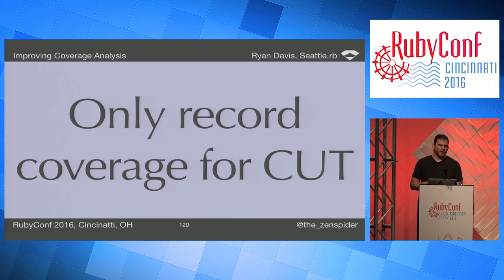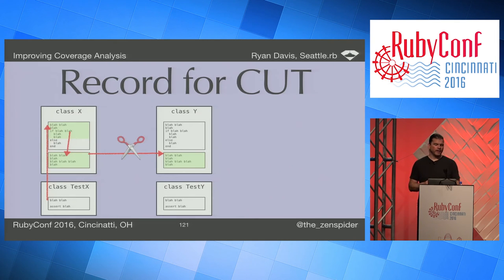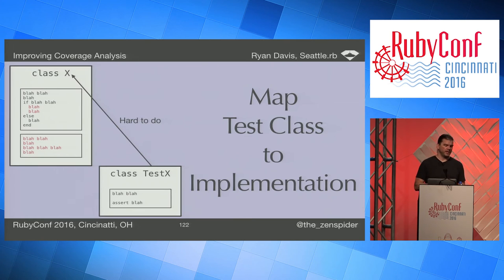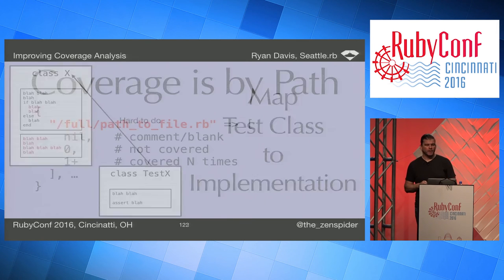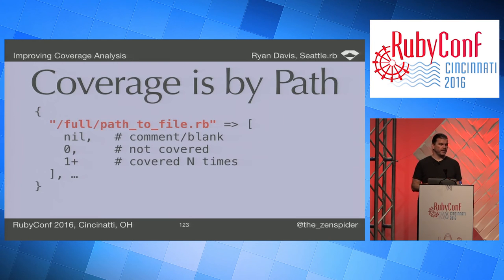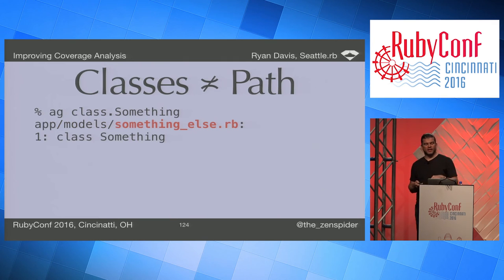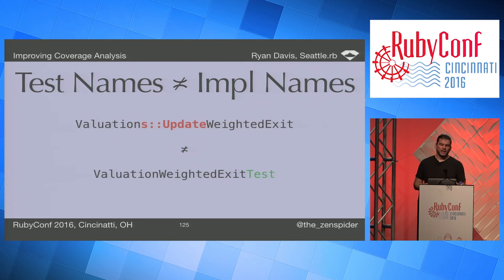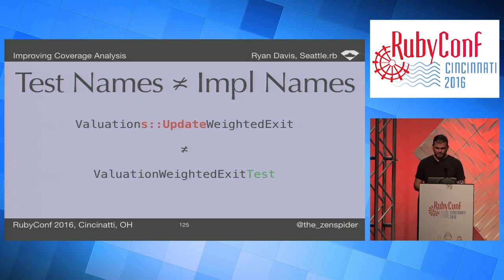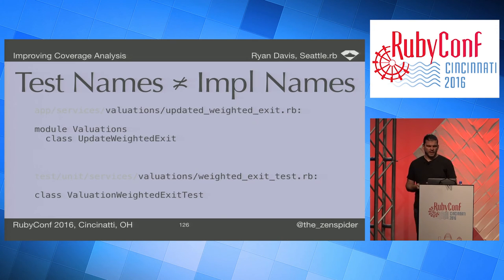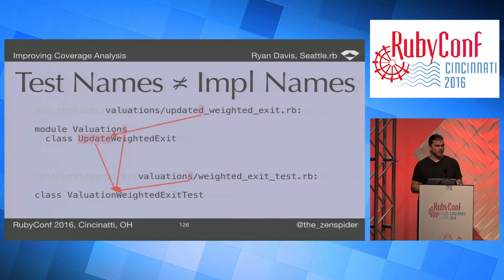The second strategy change is that it only records coverage of the class under test, or CUT — simply ignoring any coverage that calls outside the class. It does this by trying to map the test name back to the implementation name and modifying the hash based on path. This is hard because there's nothing enforcing it and people deviate all the time. Classes don't necessarily map to a file cleanly in Ruby, and test names don't necessarily map to their implementations.